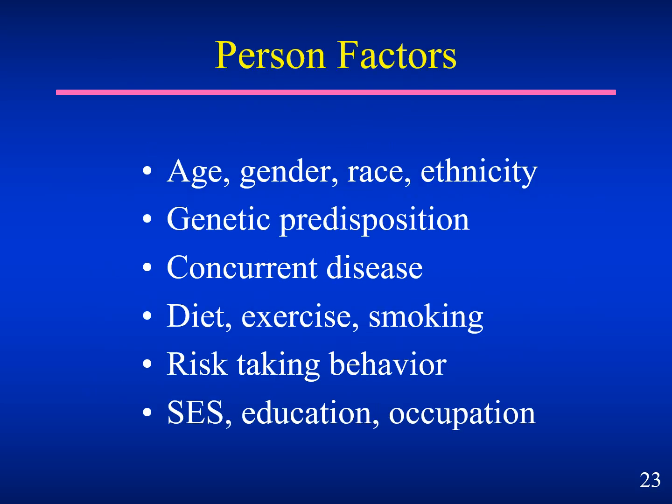Person factors include age, gender, race, ethnicity, genetic predisposition, comorbidities, diet, exercise, smoking, risk-taking behavior of the individual, education, and occupation.